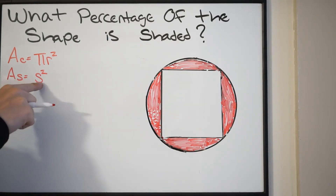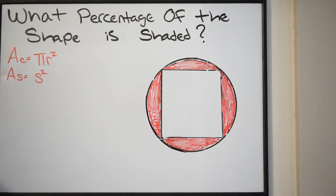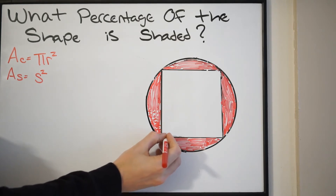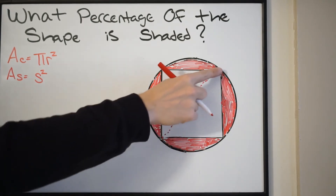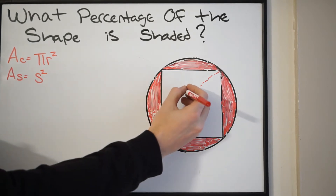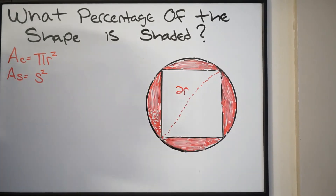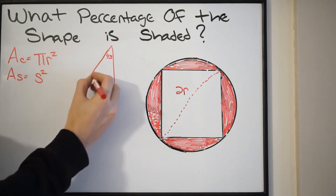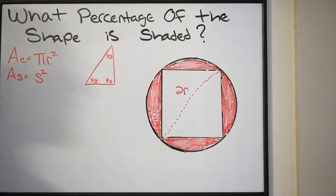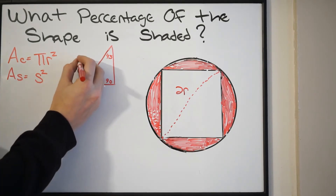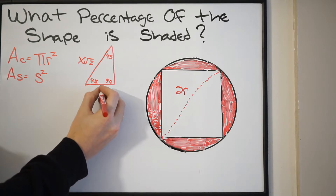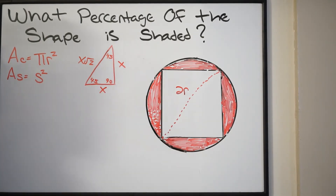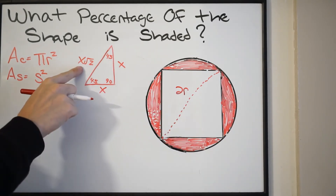I want to figure out how I can write the side length in terms of r — the radius. If you look at our shape and draw a diagonal going from corner to corner of the square, we know this is going to be the diameter of the circle, or 2 times the radius. We also have a 45-45-90 triangle, with properties: the hypotenuse is x√2, and the two legs are each x.